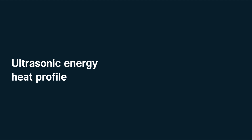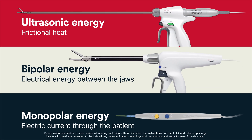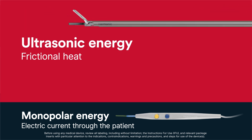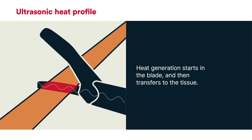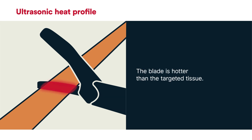Ultrasonic Energy Heat Profile. All energy devices intended to coagulate, cut, and seal vessels use heat. However, the effect of frictional heat on tissue is different than heat created from electricity, which bipolar and monopolar devices use, and are covered in separate videos. In ultrasonic vessel sealing, heat generation starts in the blade. As frictional heat builds in the blade, the heat transfers to the targeted tissue. If one were to measure the temperatures at the end of the sealing cycle, they would find the blade is hotter than the tissue.